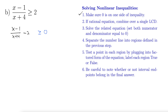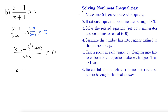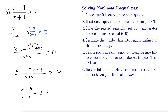Step two — combine over a single LCD. The LCD is x plus four, so we multiply the two by x plus four over x plus four. This becomes x minus one minus two times (x plus four), all over x plus four, greater than or equal to zero. Distributing the negative two gives x minus one minus 2x minus eight over x plus four, which simplifies to negative x minus nine over x plus four is greater than or equal to zero.